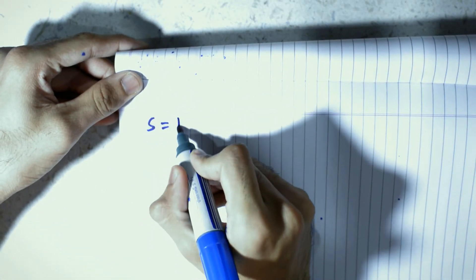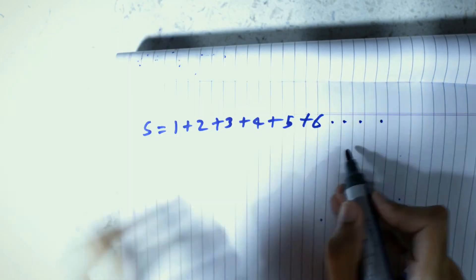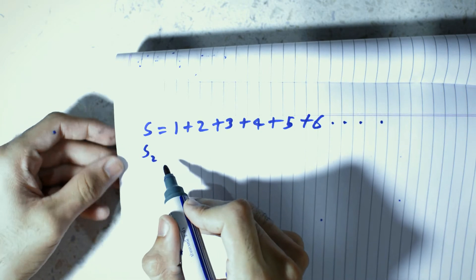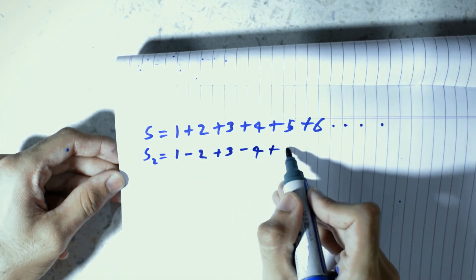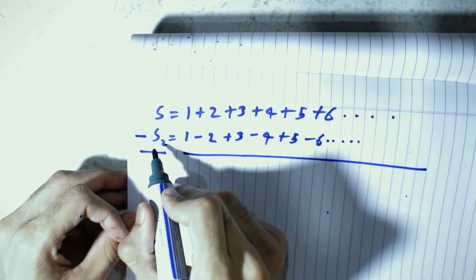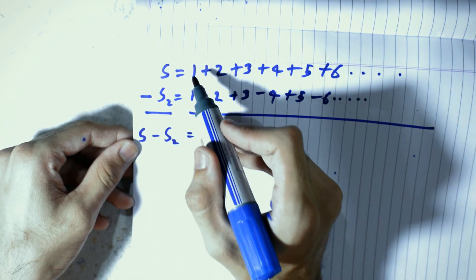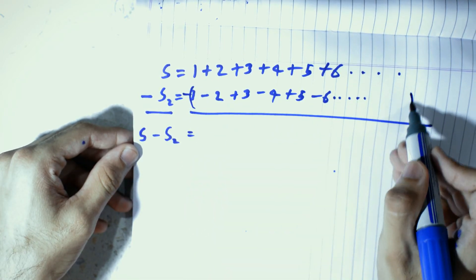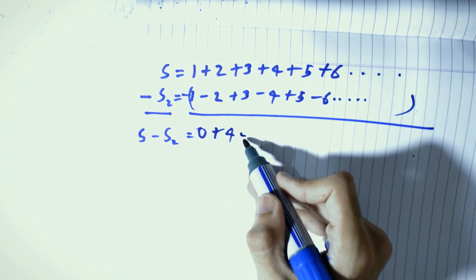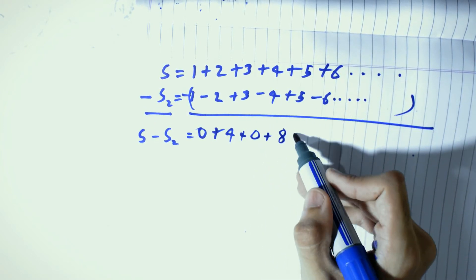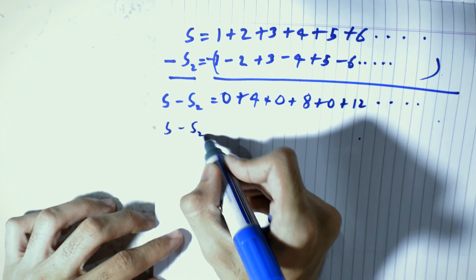Taking a fresh page, we write S equals 1 plus 2 plus 3 plus 4 plus 5 plus 6 and so on. Below it we write S2, which is 1 minus 2 plus 3 minus 4 plus 5 minus 6 and so on. Subtracting S2 from S: 1 minus 1 is 0, 2 minus minus 2 is 4, 3 minus 3 is 0, 4 minus minus 4 is 8, 5 minus 5 is 0, 6 minus minus 6 is 12, and so on.